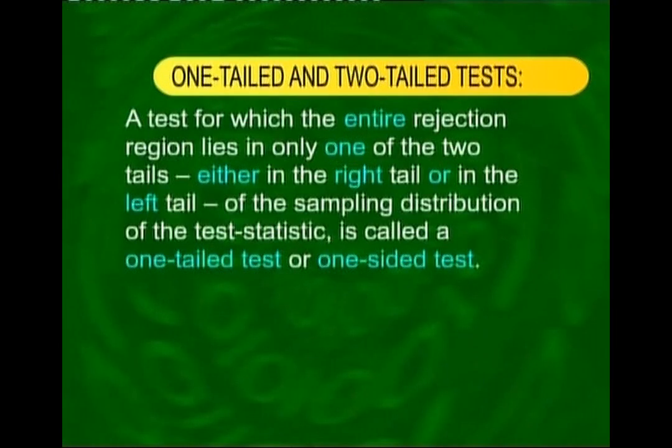In the case just discussed, we were conducting a two-tailed test. This means there is another type — the one-tailed test. A one-tailed test occurs when the entire critical region lies on only one tail: either only on the right tail or only on the left tail.